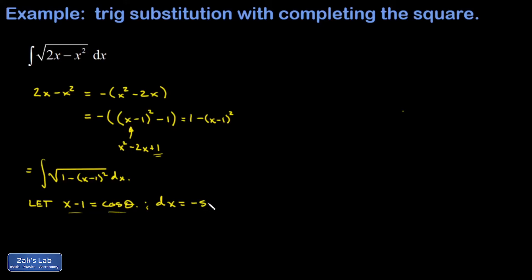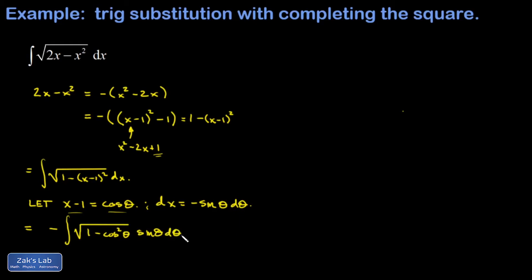Don't forget to transform the differential: on the left I get dx, and on the right I get negative sine theta dθ. That minus sign is the only downside to choosing cosine, but we can just move it out in front of the integral. Inside the square root I get 1 minus cosine squared theta. So 1 minus cosine squared simplifies to sine squared, and when I take the square root I get sine out of it. My integrand is now sine squared theta dθ — a classic situation that requires a trig identity.